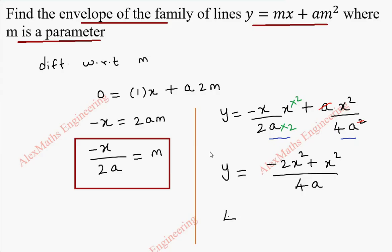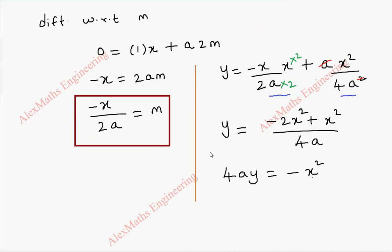By cross multiplication, we get 4ay equal to minus x². If you want, we can rearrange this by taking x² to this side and taking the other terms to the other side: x² equals minus 4ay. This is our required envelope.